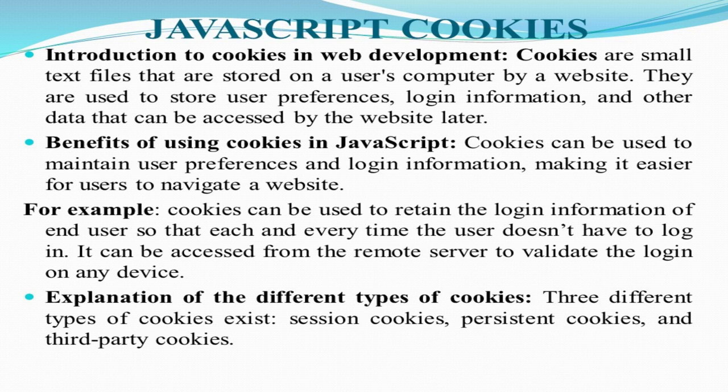There are three different types of cookies. The first one is the session cookie, the second one is the persistent cookie, and the third one is the third-party cookie.